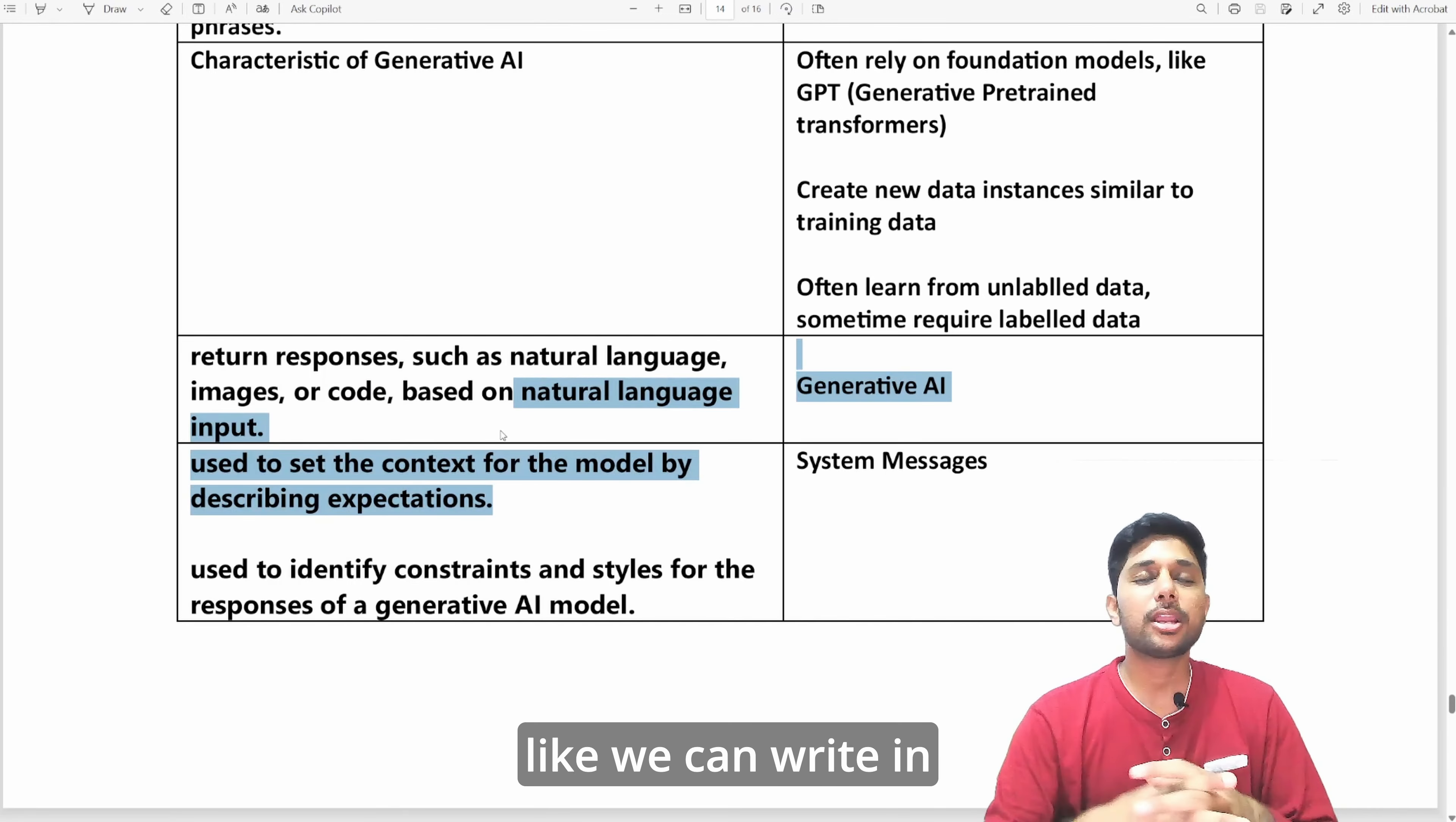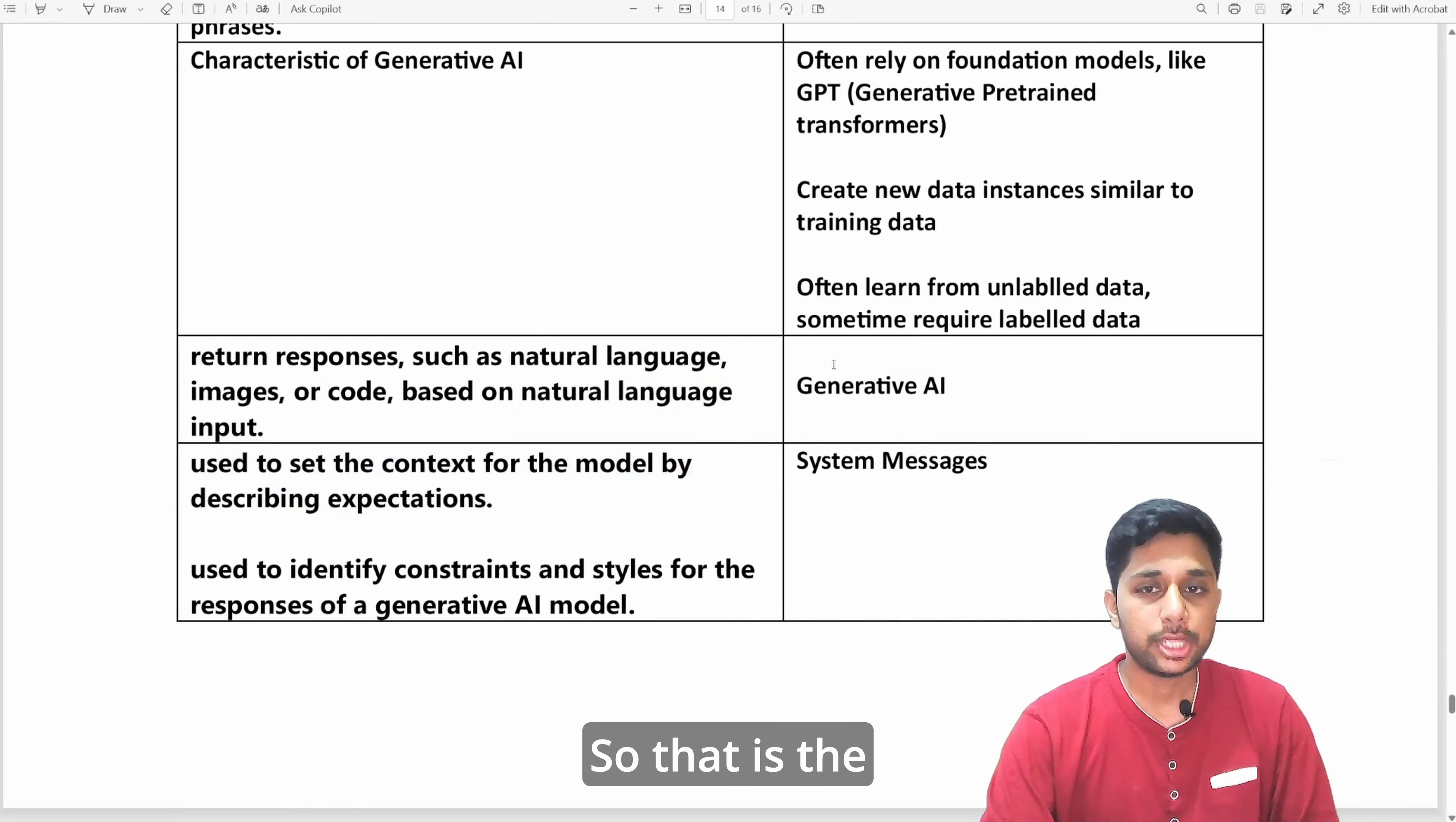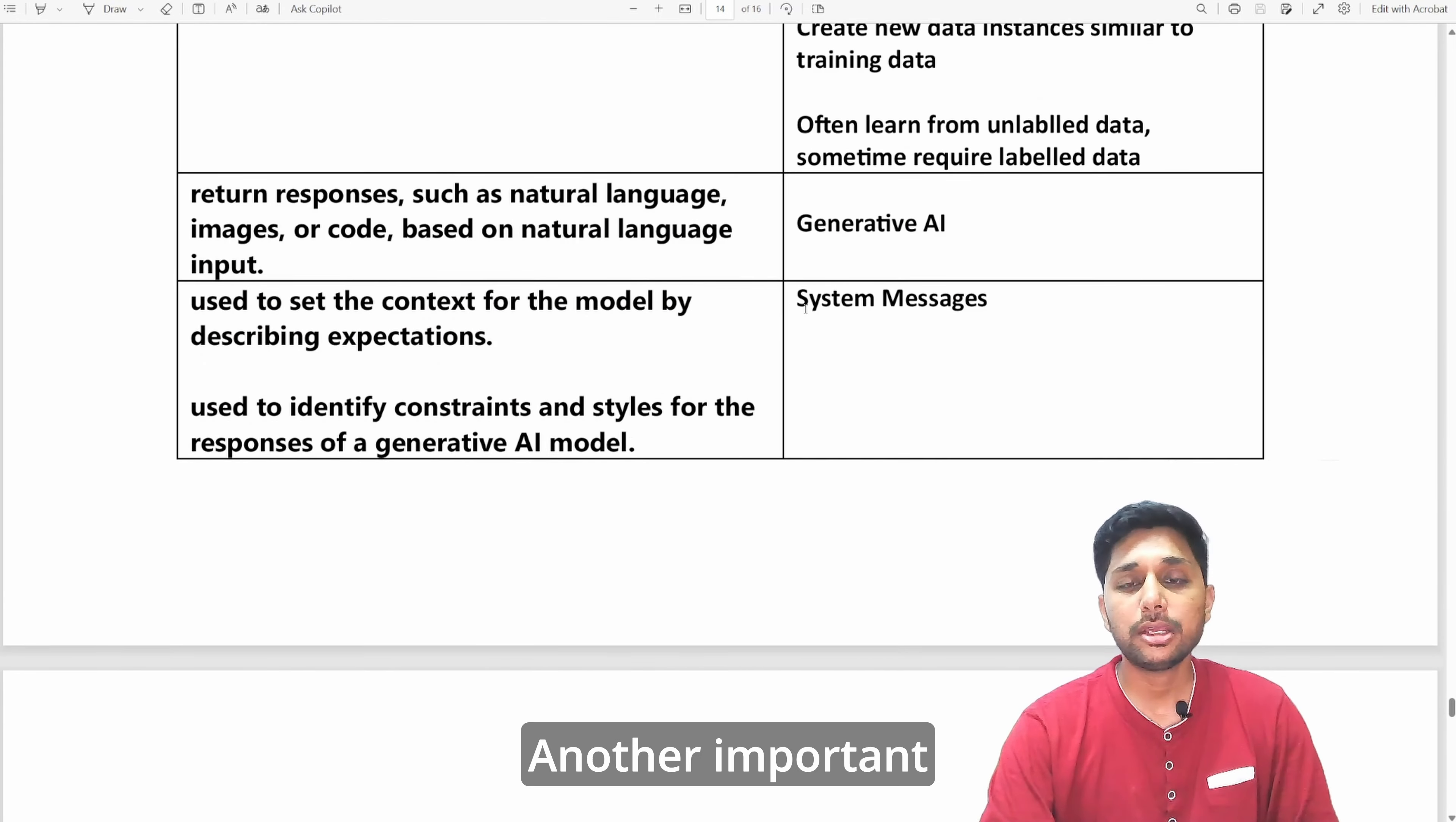You want to debug some code, you want to write some code based on natural language input. We can write in just like we want to ask anything in a text format, we just type it and it will do our work. So that is the basic intuition of generative AI.